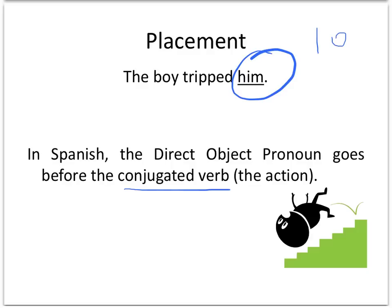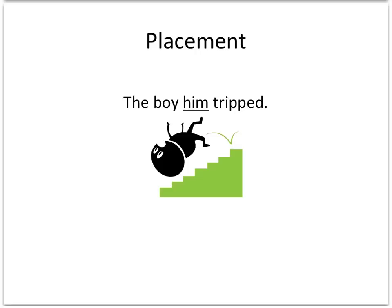Don't be scared by the term conjugated verb. Conjugated verb means the action in the sentence, the verb that is acting. This sentence is simple because it only has one verb, so we don't have to think about which one's conjugated — there is just one. There always has to be at least one in a clause. So the boy tripped him in Spanish — the him will actually go in front of the conjugated verb tripped. What you end up seeing is something that looks like this: the boy him tripped.